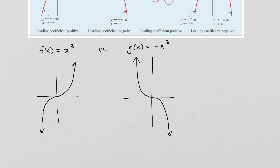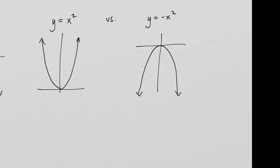The same applies to even degree polynomials. For y = x², it's a parabola going up on both sides: large positive x gives large y, and squaring a large negative x also gives a large positive y. Putting a negative in front of x² gives a reflection over the x-axis — whether you plug in positive or negative values of x, the y values are always negative, making the graph go down on both sides.